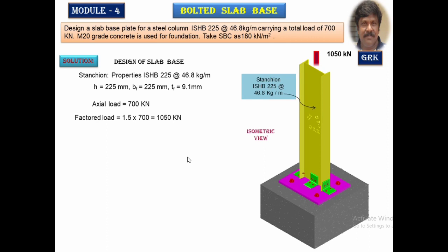The given axial load is 700 kN. Factoring it by a factor of safety of 1.5 gives 1050 kN. Only axial load is acting — this column is not subjected to moment. Therefore, a simple base slab is sufficient.